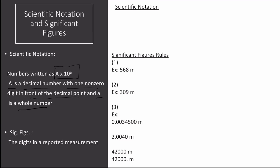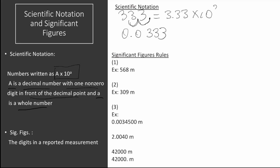Let me give you two examples, one of a whole number and one of a decimal number. In the first case, try to get a number between 1 and 10 by putting a dot at the very end and going to the left 1 and 2 times. This is equal to 3.33 times 10 raised to the power of 2 — the number of times you move to the left. This can also be rewritten as 3.33 times 100, which should give you back your original number.